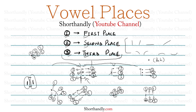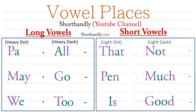Now we will look at the vowel places for each vowel individually. Throughout this course, whenever I talk about the vowels, I won't say 'vowel A as in PA' — instead I'll simply say 'vowel PA', 'vowel MAY', or 'vowel WE'. You have to keep this in mind throughout the course.